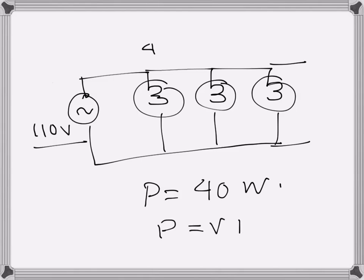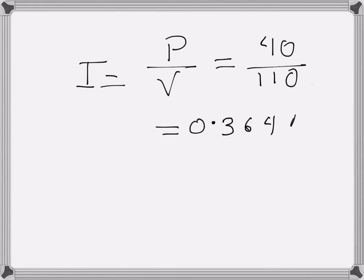The current - we know power is V times I, so current through each bulb can be found easily by P over V, which is 40 over 110, which is 0.364 amps. Or we can multiply by 1000 to get in milliamps, so that is 364 milliamps.